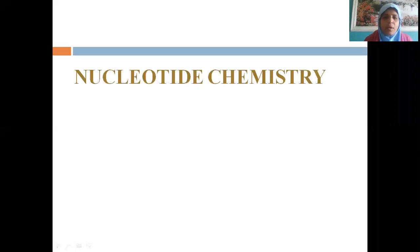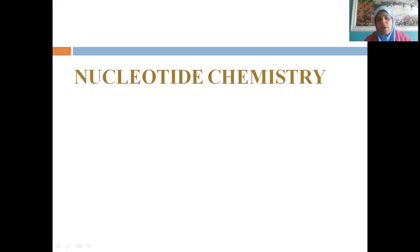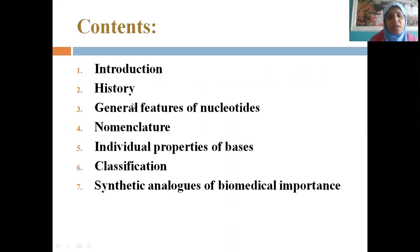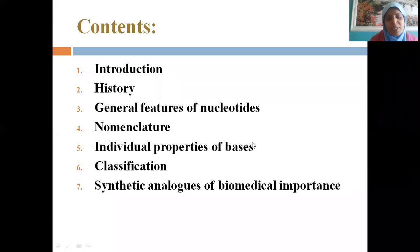We will discuss nucleotide chemistry, and after that we will go with nucleotide metabolism. We start with a little bit of introduction, history, general features of nucleotides, their nomenclature, individual properties of nitrogen bases, purines and pyrimidines, how they are classified, what are their analogues, and what is the biomedical importance of these analogues.